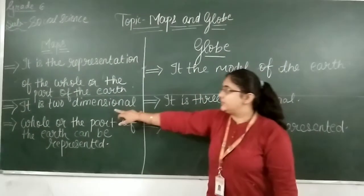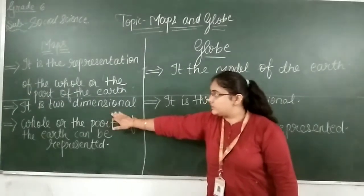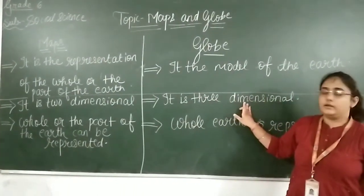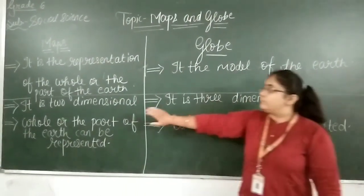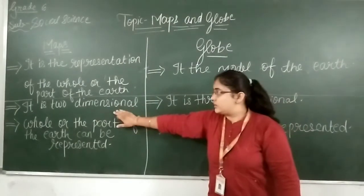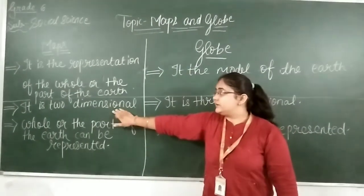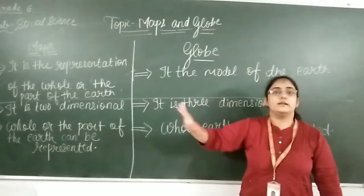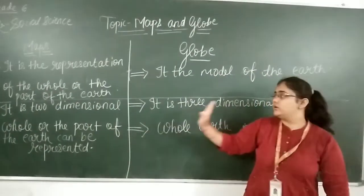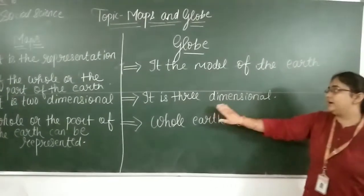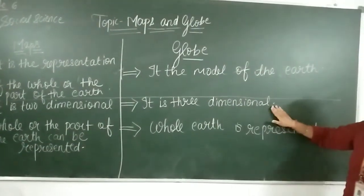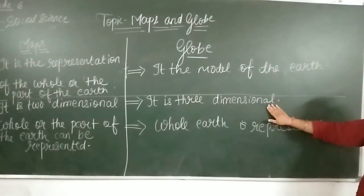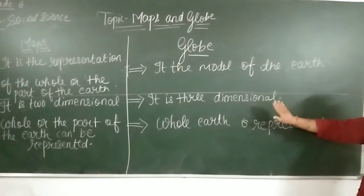A map is two-dimensional, meaning it has the representation of both length and breadth. A globe is three-dimensional, which means you can see the top, front, and bottom view at the same time.